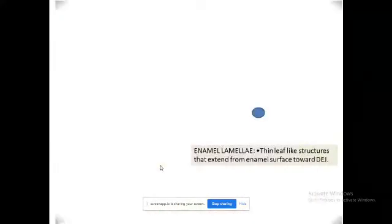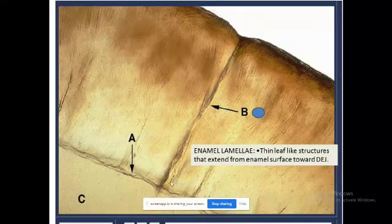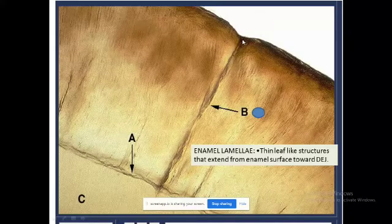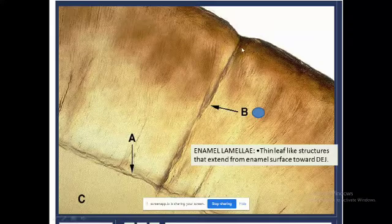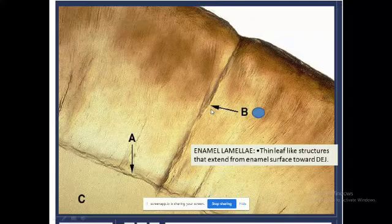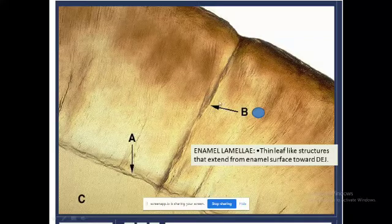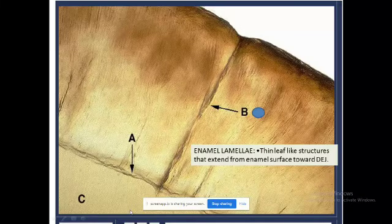Another option given to us was enamel lamellae, which is a thin leaf-like structure, another hypocalcified structure of enamel running from enamel incisal and occlusal surfaces towards the dentino-enamel junction. As we all remember, there are three types of enamel lamellae according to its position, being graded type 1, type 2, and type 3. Type 1 running towards the middle, type 2 running from middle to dentino-enamel junction, and type 3 intervening till the dentin.